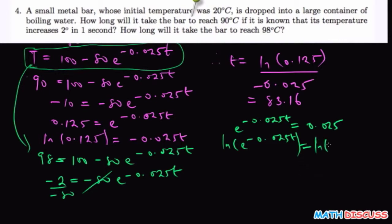That's the ln of 0.025, and then from here we have t to be equal to the ln of 0.025